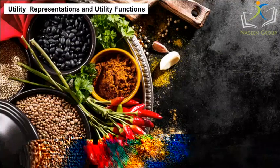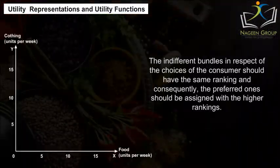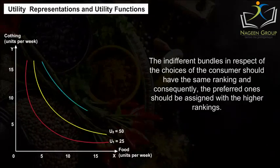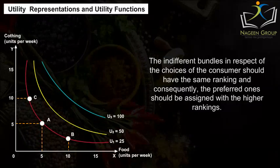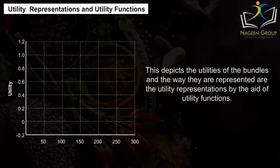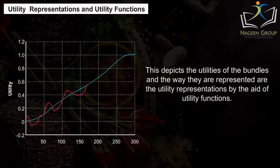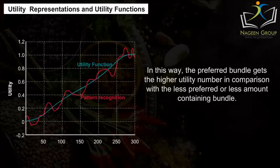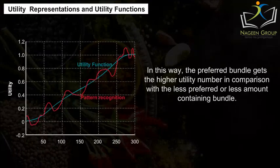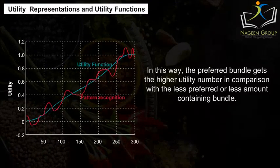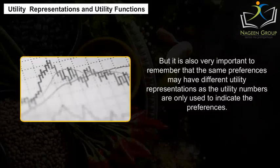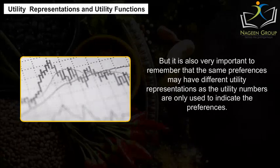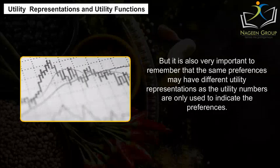Utility Representations and Utility Functions. The indifferent bundles with respect to the choices of the consumer should have the same ranking, and consequently the preferred ones should be assigned higher rankings. This depicts the utilities of the bundles, and the way they are represented are the utility representations by the aid of utility functions. In this way, the preferred bundle gets the higher utility number in comparison with the less preferred bundle. It is also important to remember that the same preferences may have different utility representations, as utility numbers are only used to indicate preferences.